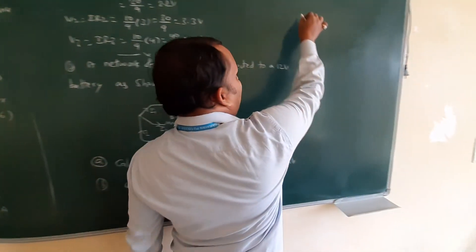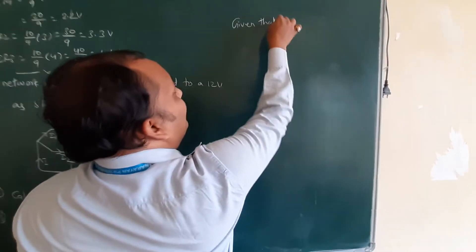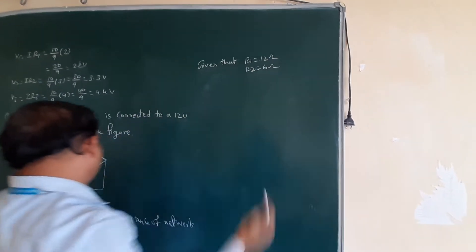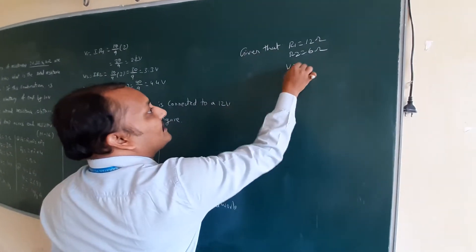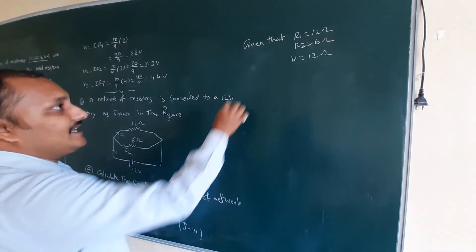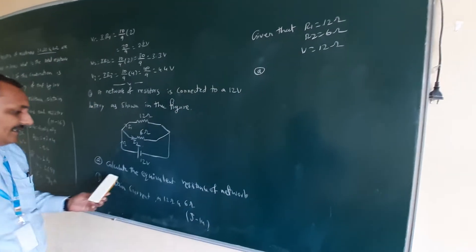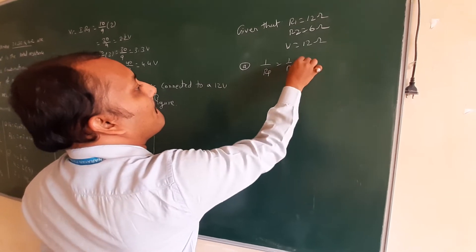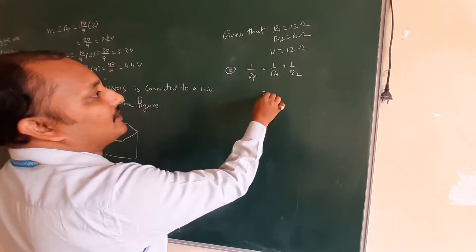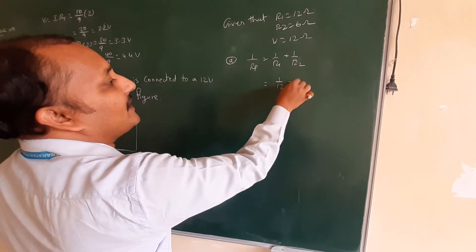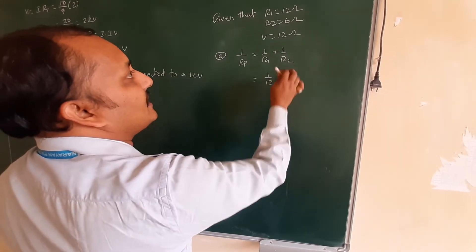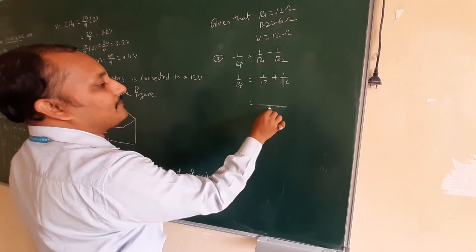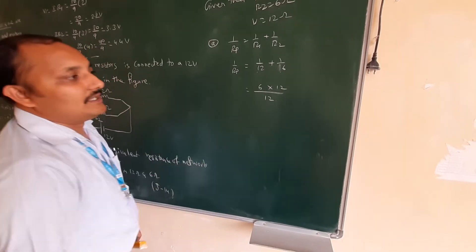Given: R1 = 12 ohms, R2 = 6 ohms, voltage = 12 volts. For equivalent resistance in parallel, the formula is 1/Rp = 1/R1 + 1/R2 = 1/12 + 1/6. Taking LCM as 12, we get 1/Rp = (1 + 2)/12.